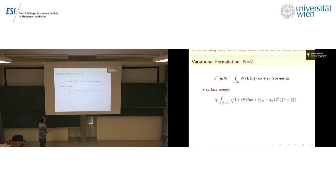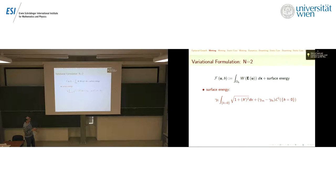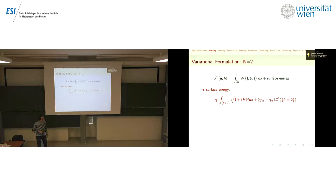Now let me talk about the surface energy. This is what we assume for the surface energy — there are three parameters. In the region where you have the film, this is just the length of the curve — the isotropic case — and gamma_f is the constant describing the surface energy between the film and the vapor. Then in the region where the height h is zero, you have two constants: gamma_vs for vapor-substrate, and gamma_fs for film-substrate.